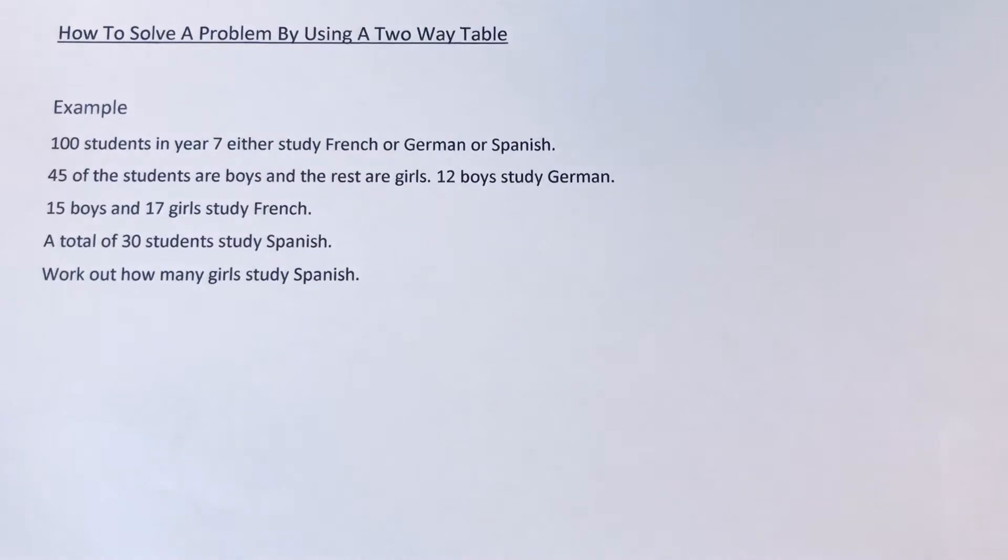So let's go straight into the example here. We've got 100 students in Year 7 either study French, German or Spanish. 45 of the students are boys and the rest are girls. 12 boys study German, 15 boys and 17 girls study French, a total of 30 students study Spanish.